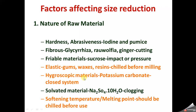Hygroscopic materials — those which absorb moisture from the atmosphere when exposed — such as potassium carbonate, have to undergo size reduction under a closed system; otherwise they would absorb moisture from the atmosphere. Next are solvated materials, which have water of crystallization in their native state, like sodium sulphate. Clogging can take place in them, so their softening temperature and melting point should be considered.